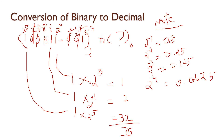Output decimal: 35.125 — combining the integer part 35 and the fractional part 0.125. This confirms the decimal number matches the previous slide's decimal number.